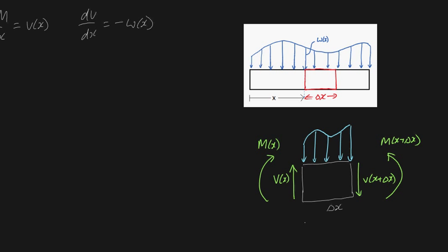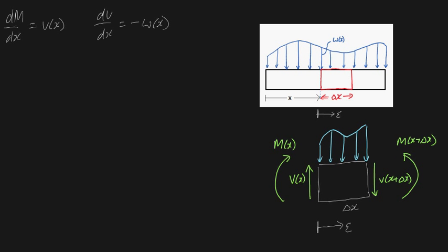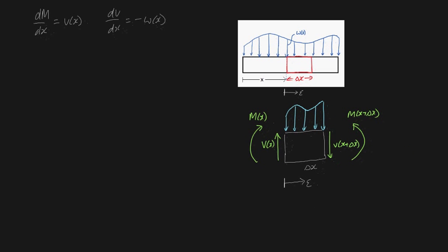Before I continue with the mathematics, let me also define a new variable. I'm going to define epsilon as being from where x ends onwards — so this is epsilon along this chunk that I've taken. Now because we know this bar is in static equilibrium, that means we know it satisfies the condition that the sum of forces in the vertical direction is equal to zero.